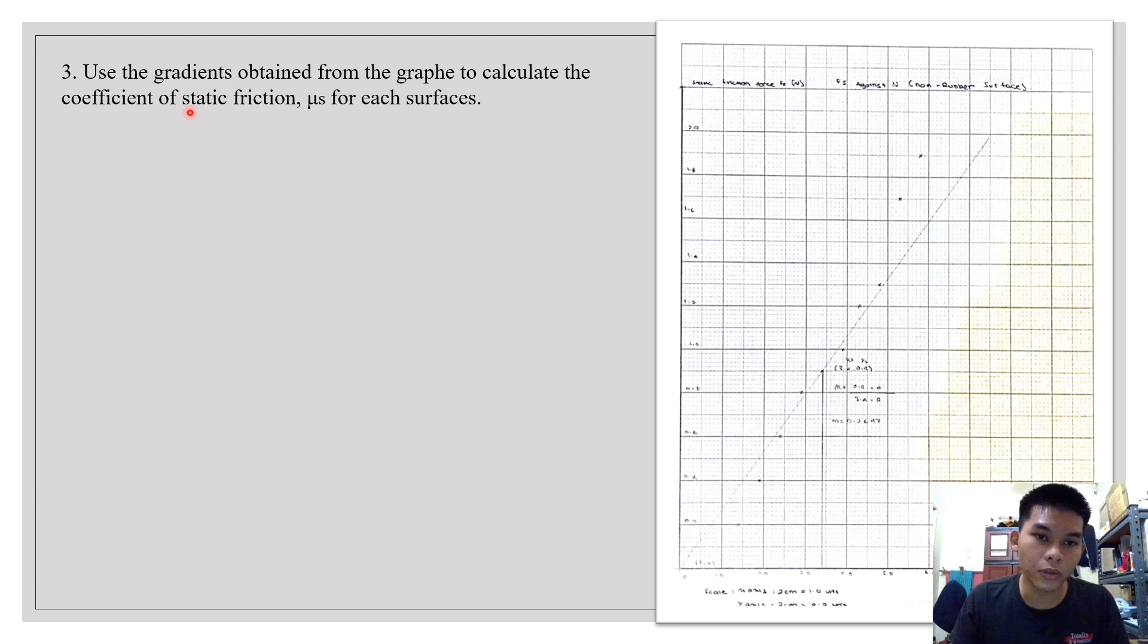Use the gradient obtained from the graph to calculate the coefficient of static friction. We have calculated the coefficient for both of the graphs. For the first, the rubber surfaces present the value is about 1.143, which is higher than the coefficient of 0.2647.